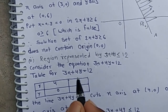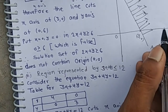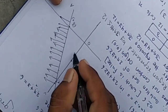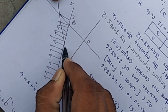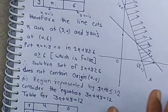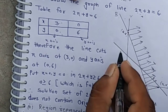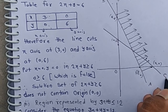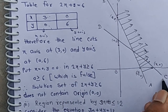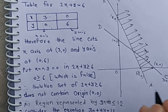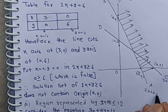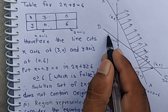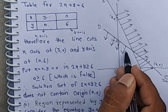The second line cuts the x-axis at 4 comma 0 and the y-axis at 0 comma 3. Line CD is the line 3x plus 4y equals 12 and line AB is 2x plus y equals 6. Since the second inequality contains the origin, the solution set is the portion below the line CD.